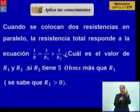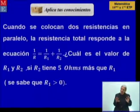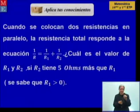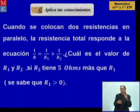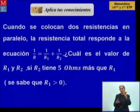Ahora les propongo el siguiente ejercicio. Aplica tus conocimientos, porque ya tienes suficiente conocimiento para resolver este ejercicio. Cuando se colocan dos resistencias en paralelo, la resistencia total responde a una ecuación. ¿Cuál es el valor de R1 y R2, si R2 tiene 5 ohms más que R1? Se sabe además que R1 es positiva.